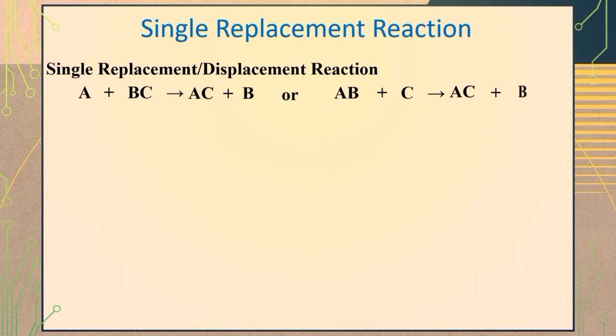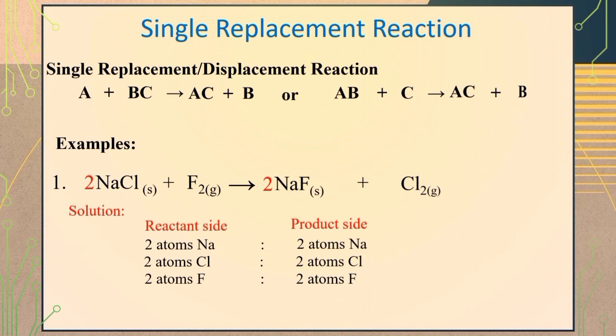Let's have some examples. In a reaction of sodium chloride and fluorine, fluorine can replace chlorine forming the products sodium fluoride plus chlorine. We can balance the equation by putting coefficient of 2 before the chemical formula of sodium chloride and coefficient of 2 before the chemical formula of sodium fluoride, giving you 2 atoms sodium, 2 atoms chlorine, and 2 atoms fluorine both in the reactant and product side.